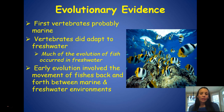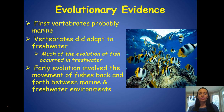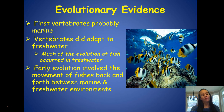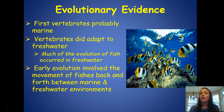The first vertebrates were probably marine, which means fish were probably the first vertebrates. They did adapt to freshwater — there are a lot of freshwater fish species — but interestingly, the evolution for most fish occurred in freshwater. This early evolution involved movement of fish back and forth between marine and freshwater environments, and there are still fish today that do that as part of their reproduction.